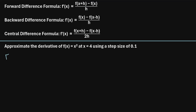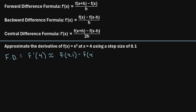So let's see how to use this formula in this case. For the forward difference, f prime of 4 is approximately equal to f of x plus h. Since x is 4 and h is 0.1, that's 4 plus 0.1, which is 4.1. So we have f of 4.1 minus f of 4, divided by the step size h, which is 0.1.